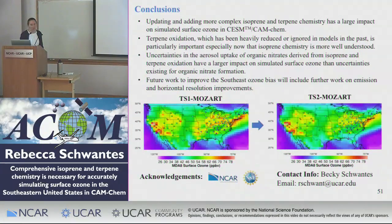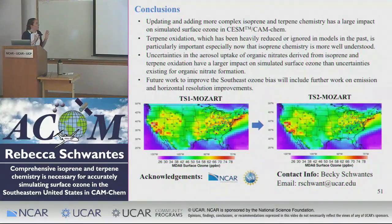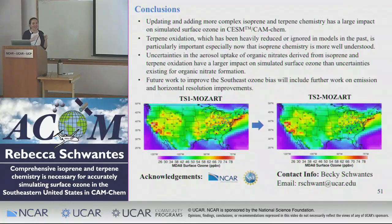In conclusion: updating and adding more complex isoprene and terpene chemistry has a large impact on simulated surface ozone. Terpene oxidation, which has been heavily ignored or heavily reduced in most schemes, is actually really important and needs to be added more completely into models. We really need further constraints on aerosol uptake of organic nitrates and better representation within models to reduce ozone uncertainties. Future work will include emissions and horizontal resolution improvements, and hopefully also dynamics and ozone deposition improvements — working toward getting ozone right for the right reasons with a concerted effort in our newest models.